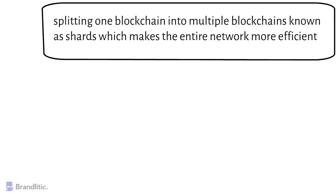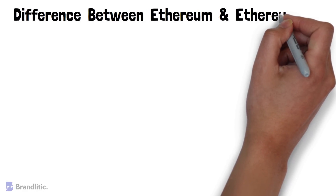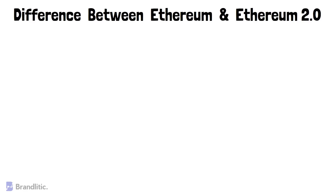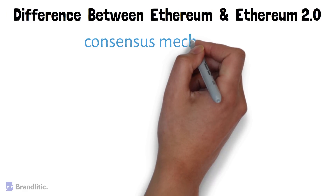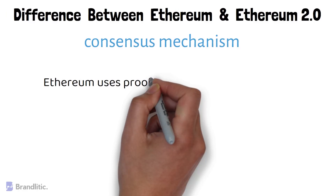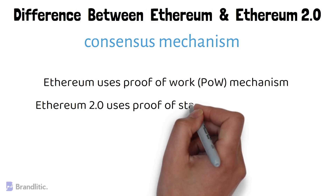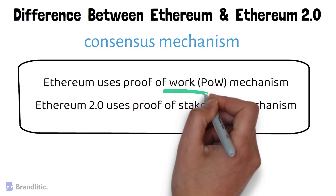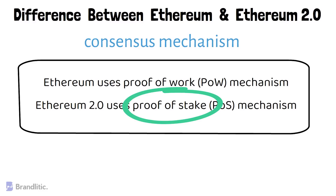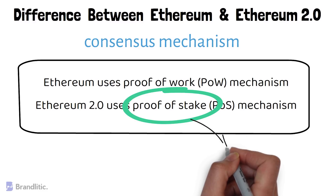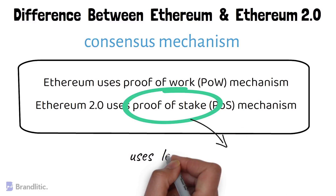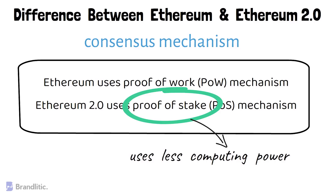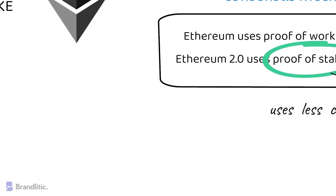Let's discuss what is the difference between Ethereum and Ethereum 2.0. The major difference is in the consensus mechanisms they use: Ethereum uses Proof of Work, while Ethereum 2.0 uses Proof of Stake. As Proof of Stake is a more energy-efficient mechanism compared to Proof of Work, it uses less computing power to secure a blockchain, making it more favorable.